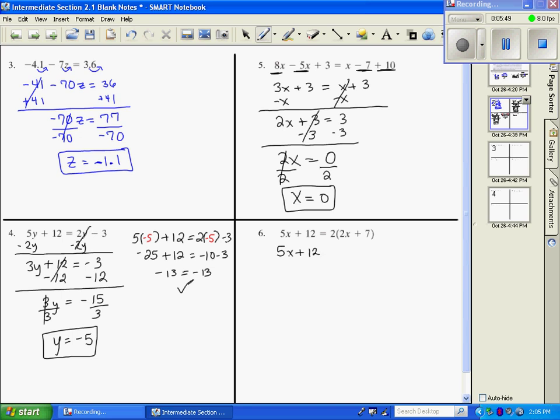Number 6. 5x plus 12. The first thing we need to do is distribute right here. 2 times 2 is 4x. 2 times 7 is 14. Now we want to move all the variables to one side and all the numbers to the other. So I subtract 4x. x plus 12 equals 14. To get x by itself, if they add 12, we're going to do the opposite. And subtract 12 from both sides. So x equals 2.